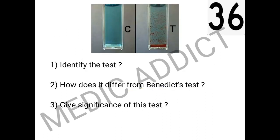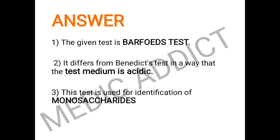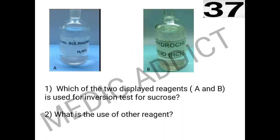Moving to the next spot: we can see two test tubes, of which C is the control and T is the test. We have to identify the test, state how it differs from Benedict's test, and give its significance. The given test is Barfoed's test. This test takes place in acidic medium, whereas Benedict's test takes place in basic medium. Barfoed's test is used for the identification of monosaccharides specifically.